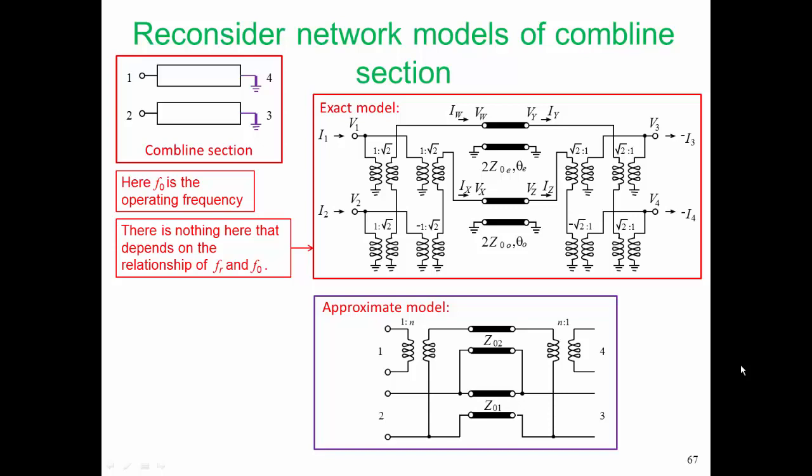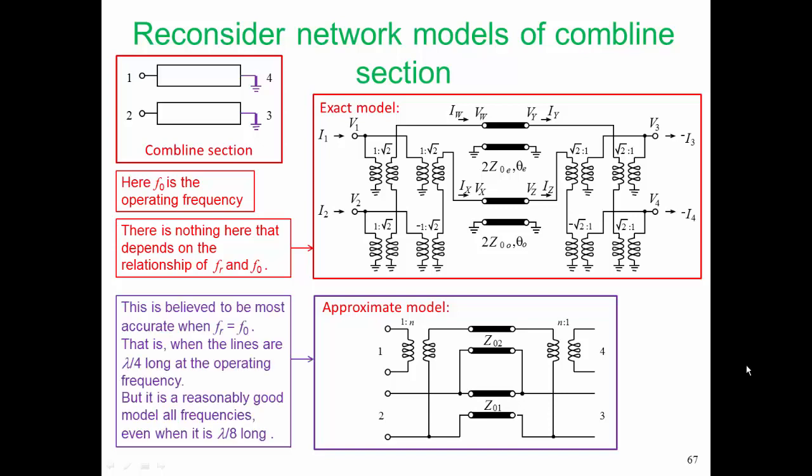So this is an approximate model. It is believed to be most accurate when FR is equal to F0—that is, most accurate under all conditions. And that is when the lines are lambda over four long at the operating frequency. But it is a reasonably good model at all frequencies, even when it is lambda over eight long.